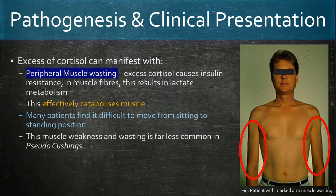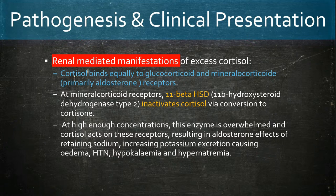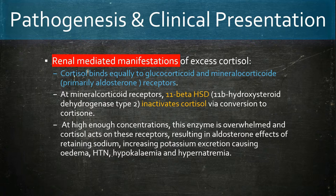Cortisol binds equally to both mineralocorticoid receptors — intended for aldosterone — and glucocorticoid receptors. In the body, the enzyme 11-beta-HSD inactivates cortisol by converting it to cortisone. However, at high enough concentrations the enzyme becomes overwhelmed and cortisol acts on mineralocorticoid receptors. This results in aldosterone-like effects: retaining sodium, increasing potassium excretion, oedema, hypertension, hyperkalemia, and hyponatremia.